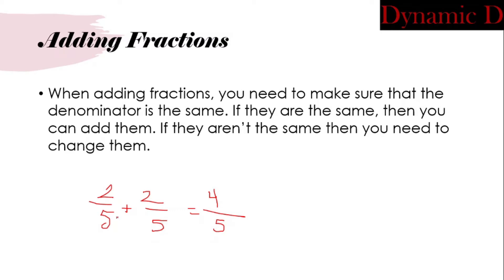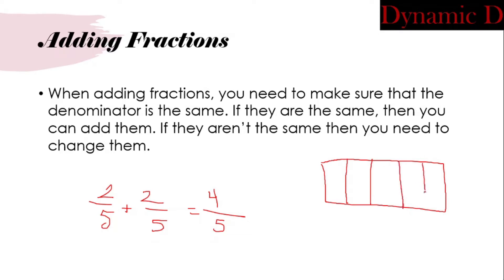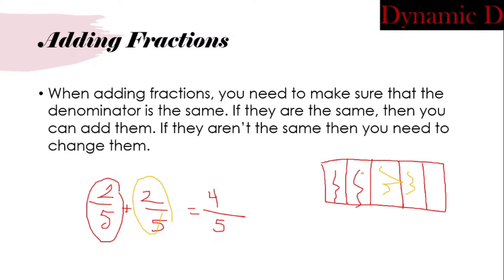Now, you might be asking why we're keeping the denominator. Well, if I draw a rectangle and cut it into five parts, I first shade in two parts — this is the two-fifths. Now if I shade in another two parts, as you can see, since they're the same parts we just add them, and we get four-fifths.